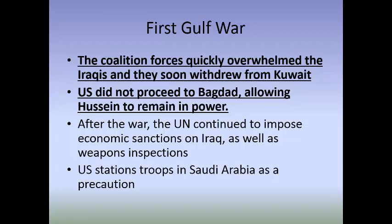After the war, the UN continued to impose economic sanctions on Iraq and conducted routine weapons inspections to prevent Iraq from developing chemical, biological, or nuclear weapons. As a precaution, the US kept many thousands of troops stationed in Saudi Arabia in case Hussein ever decided to invade a neighboring country again - a deterrent, since Saudi Arabia had been one of the coalition countries during the Gulf War.